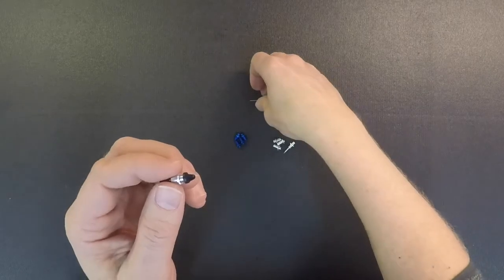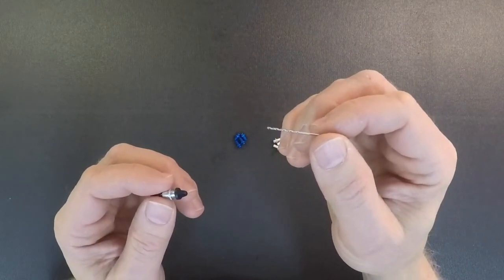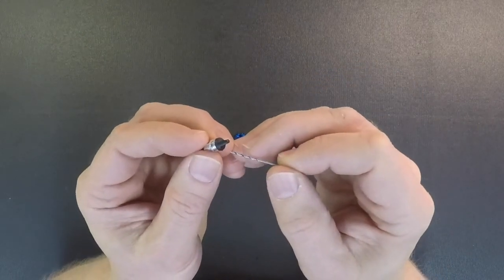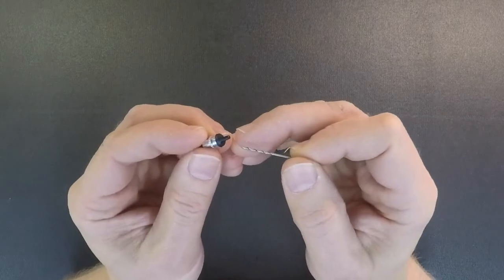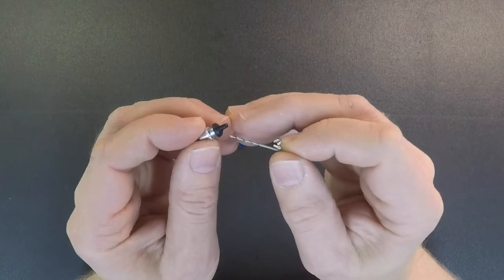So what we did is we gave you a drill bit, a one millimeter drill bit with the shock bodies, and what you're going to want to do is drill a hole in this shock cap.